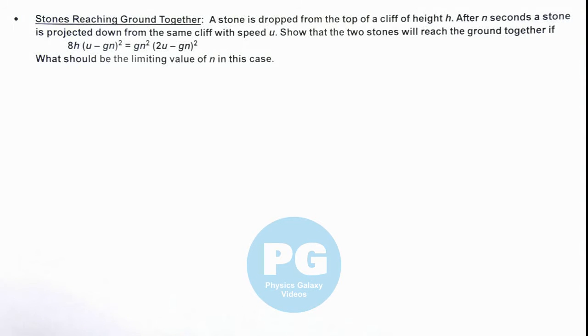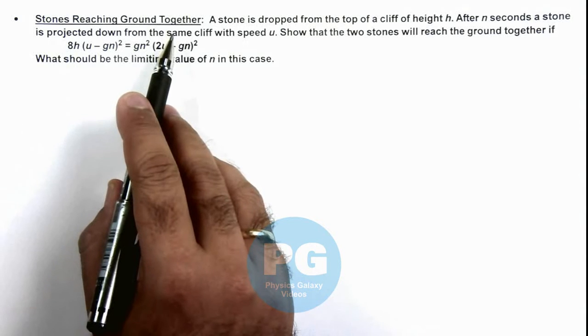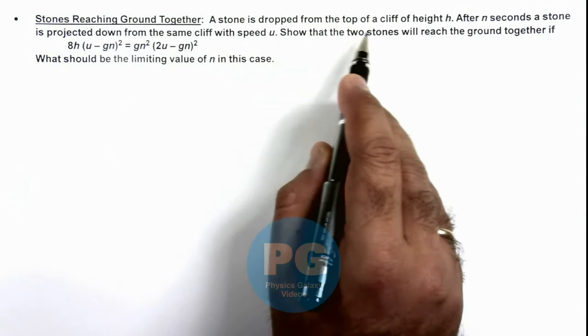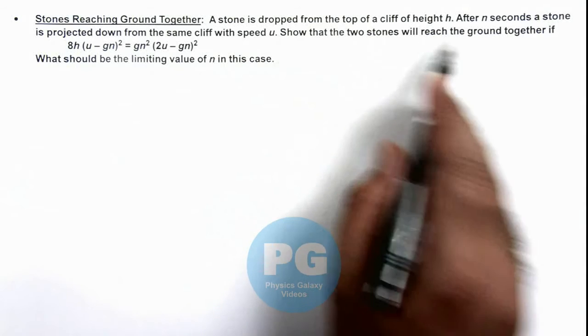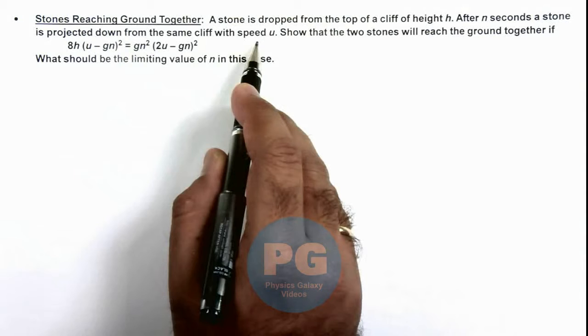In this illustration, we'll see a situation when stones are reaching ground together. We are given that a stone is dropped from the top of a cliff of height h. After n seconds, a stone is projected down from the same cliff with speed u.